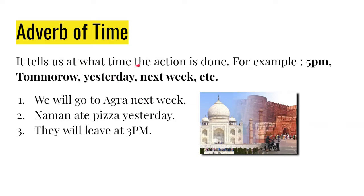Adverb of time: it tells us at what time the action is done. For example: 5 PM, tomorrow, yesterday, next week, next month, last week, etc. 'We will go to Agra next week' — here 'next week' is the adverb of time that tells us at what time we will go to Agra. 'I ate pizza yesterday' — here 'yesterday' is the adverb of time.